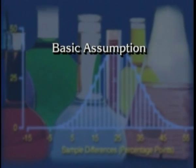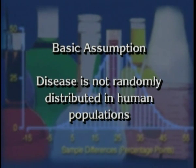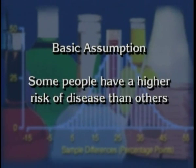Underlying all this is the basic assumption that disease is not randomly distributed in human populations. That is, some people have higher risks of disease than others, and what we want to do is to account for why the risk is higher in some people than others, in order to identify factors that can be modified in order to prevent disease.